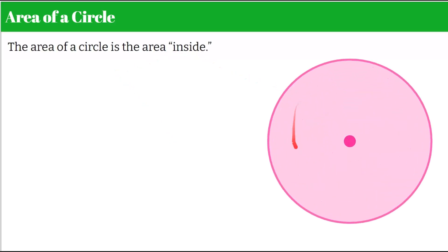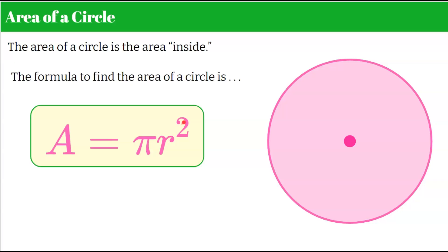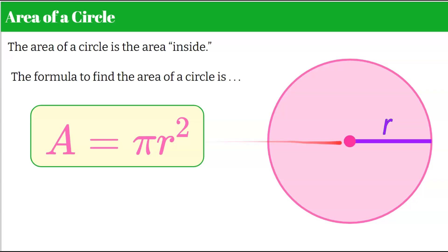Now let's talk about the area of a circle. The area is everything inside — I've shaded it all pink. The formula to find the area of a circle is A equals pi r squared — pi multiplied by r squared. Remember that r squared is r times r, so you could also think of it as pi times r times r. Pi is a symbol representing an approximate value of 3.14. Leaving an answer in terms of pi using the symbol is exact; using 3.14 is approximating. This formula uses the radius, which is half the diameter.